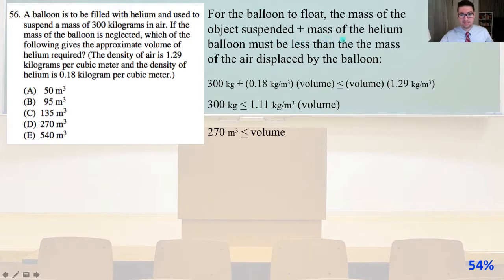For the balloon to float, the mass of the object suspended plus the mass of the helium balloon must be less than the mass of the air displaced by the balloon. 300 kg plus 0.18 kg/m³ times the volume must be less than or equal to the volume times 1.29 kg/m³. 300 kg must be less than or equal to 1.11 kg/m³ times the volume. The volume must be greater than or equal to 270 m³. That is answer D.